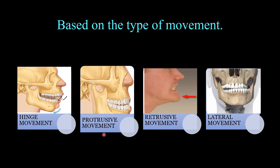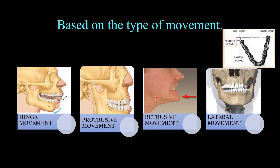The protrusive movement occurs after the condyle has exceeded 13 degrees of rotation and the hinge axis has shifted to the mandibular foramen — another commonly asked MCQ. The mandible moves forward and downward in protrusive movement. The retrusive movement occurs when the mandible is forcefully moved behind the centric relation; it is achieved by the fibers of the temporalis, digastric, and deep fibers of the masseter. Fourth is lateral movement, which includes lateral rotation and the Bennett shift — the bodily lateral shift of the mandible.